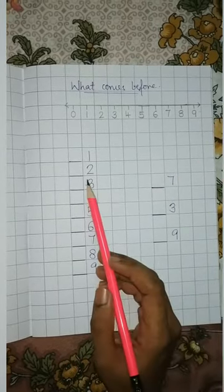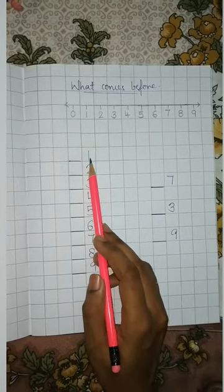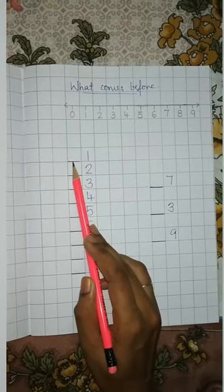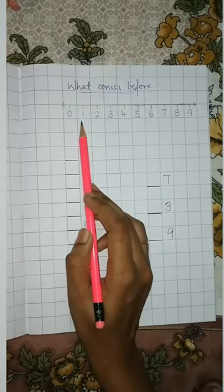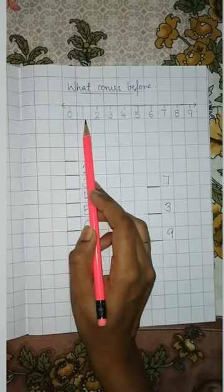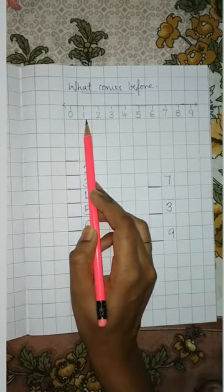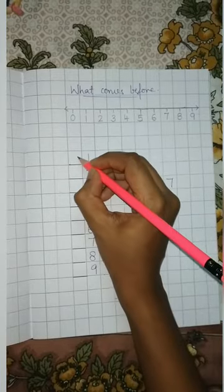Now children, this is number 1 and there is a blank before number 1. So where is number 1 here? On the number line, number 1 is here. So to find the before number, which side will you go? You will go towards the left side, meaning this side. So this is number 1 — you go towards the left side. Before number 1 is 0. So you will write number 0.